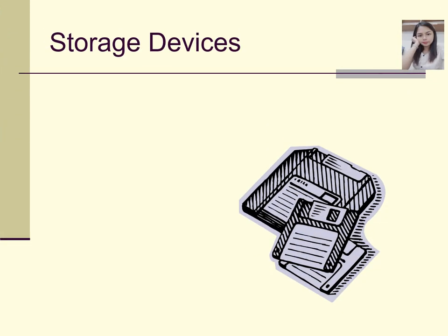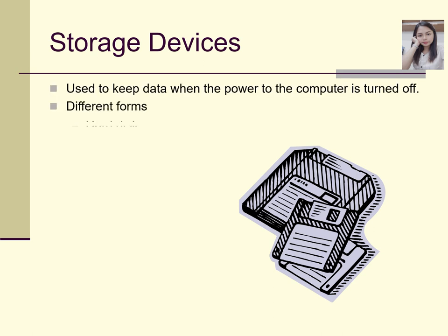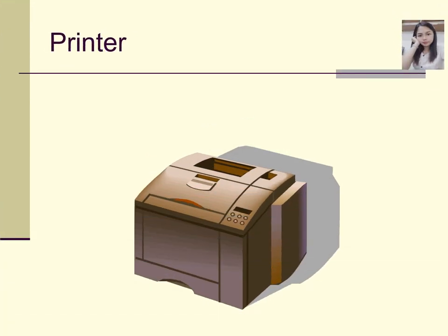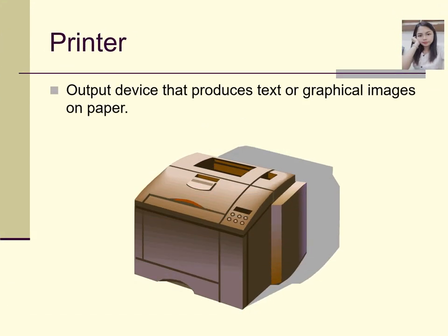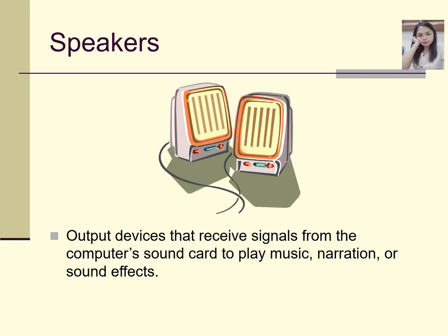Storage devices include the diskette and flash drive. Output devices also include printers, which produce text or graphical images on paper — so documents and pictures that you see on your monitor can be printed. Speakers are output devices that receive signals from the computer's sound card to play music, narration, and sound effects. When you want to play music while doing your work, the volume comes through your speakers.